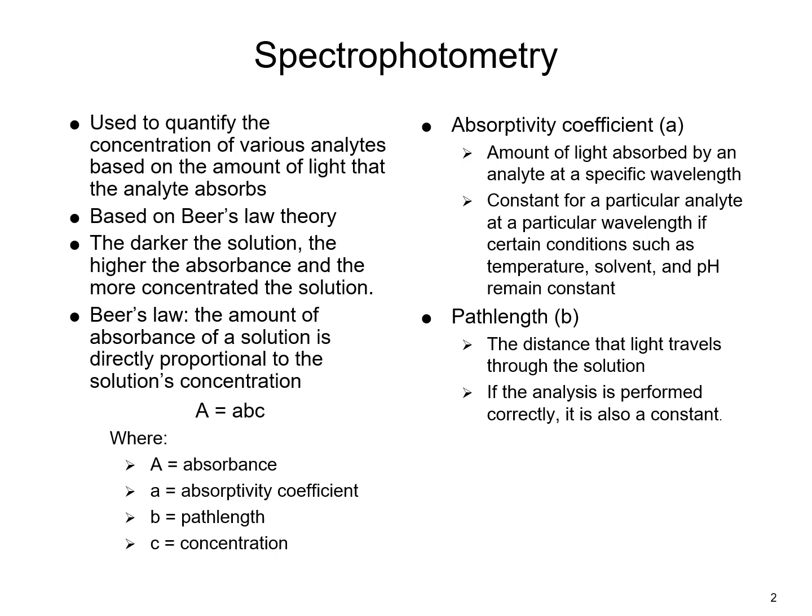In general, spectrophotometry is used to quantify the concentrations of various analytes based on the amount of light that the analyte absorbs. This is based on the theory of Beer's Law, which states that the amount of absorbance of a solution is directly proportional to that solution's concentration. So in practical terms, the darker the solution means the higher the absorbance and the more concentrated that particular solution is.